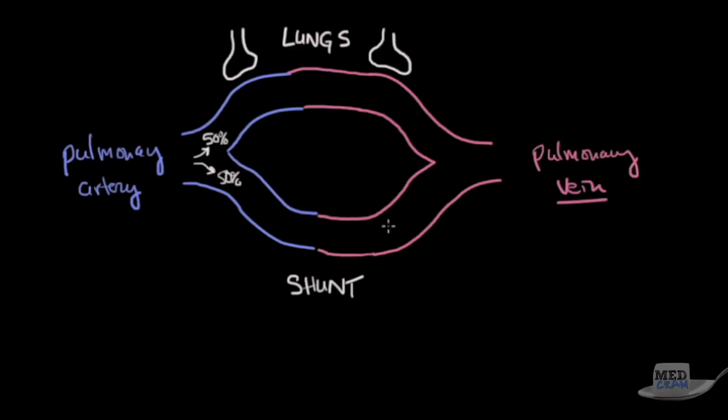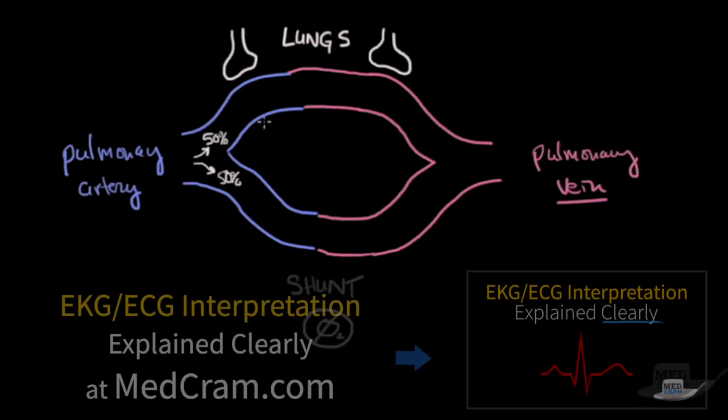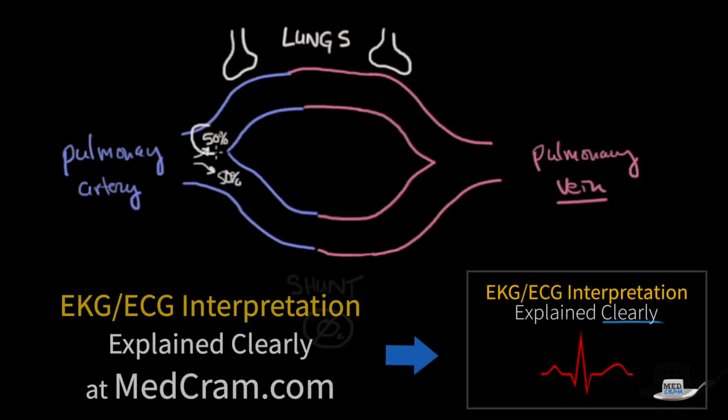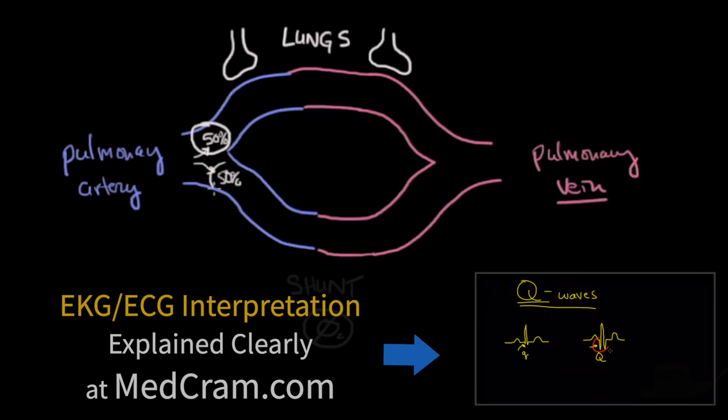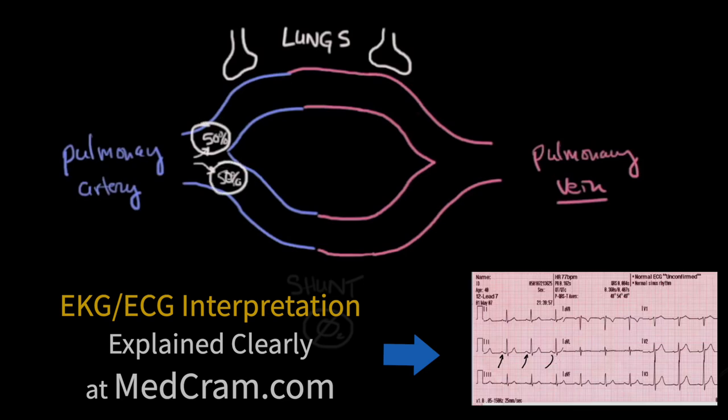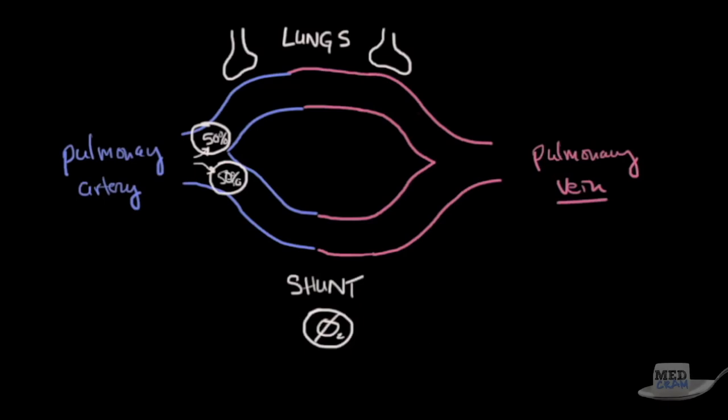Even though I've drawn this with kind of a blue and red, you must understand that there is no O2 coming here whatsoever. This is exactly what a shunt is, a 50 percent shunt as I mentioned, but it doesn't have to be 50, you can have less you can have more. I'm just making it 50 percent for illustrative purposes.